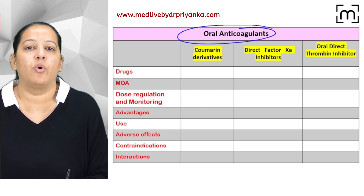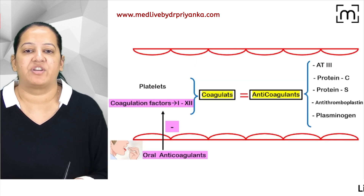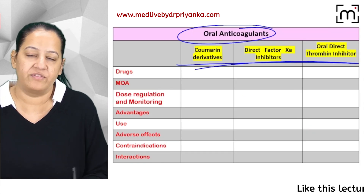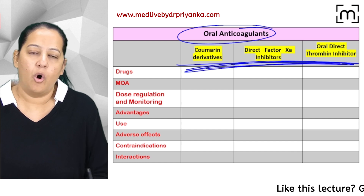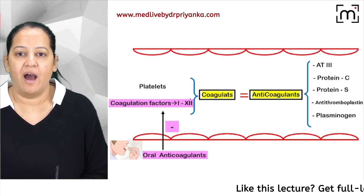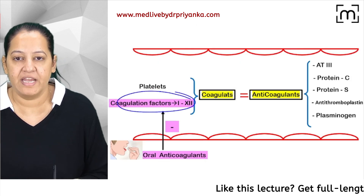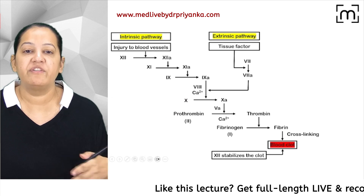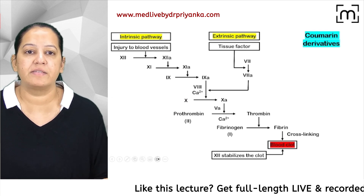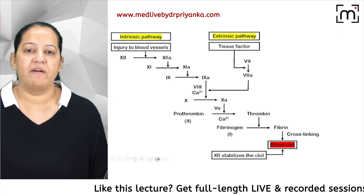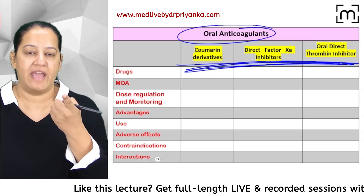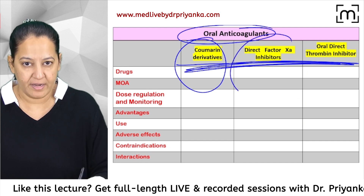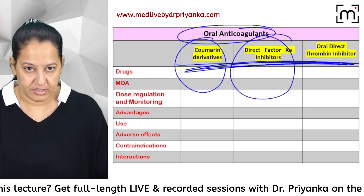Now let's look at the mechanism of action. All oral anticoagulants are inhibiting certain coagulation factors. We will go through all three categories one by one — first coumarin, then direct factor Xa inhibitors, then direct factor 2a inhibitors.